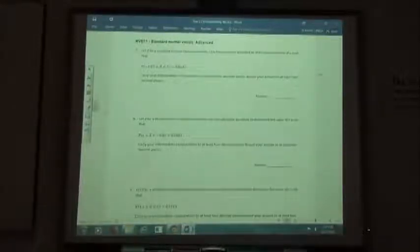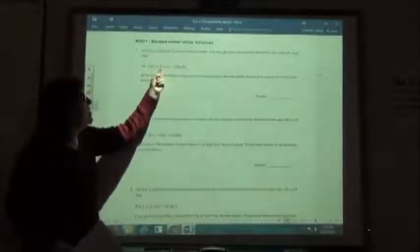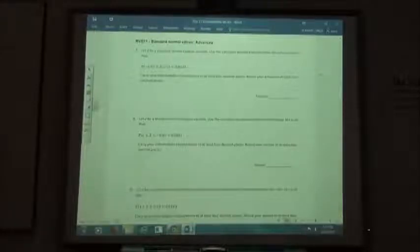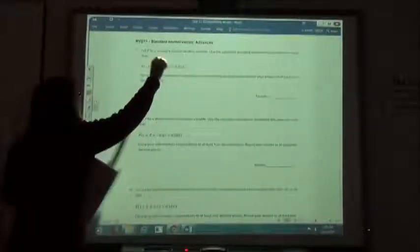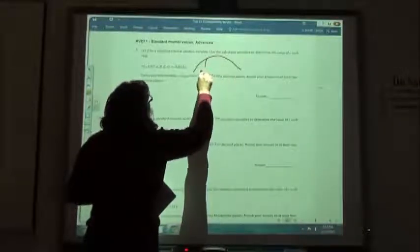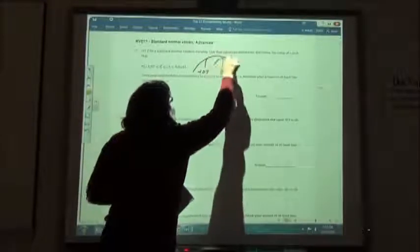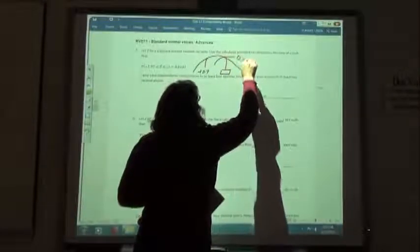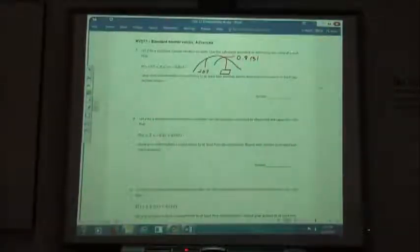So now they're going to give us the beginning number, they're going to give us the area that's in the middle and we have to find out what the end number is. So on our ALEKS calculator, first of all I have to figure out here, I know this number here was negative 1.07. I want to find this number over here on the end that would give me an area of 0.8131.